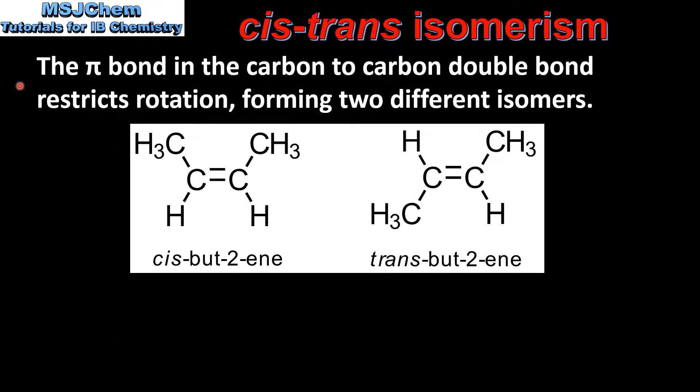First we look at molecules that have a double bond. The pi bond in the carbon-to-carbon double bond restricts rotation, forming two different isomers.